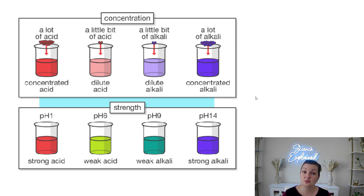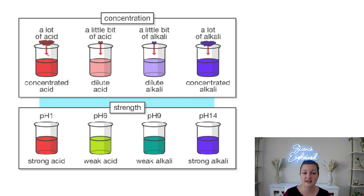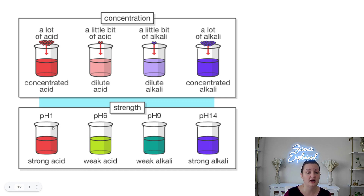Here's a visual to think about concentration, molarity, and pH strength. If we put a whole lot of acid in our solution, we can consider that a very concentrated or high molarity acid. This would be an example of like a pH of one — a low number — and that's going to be a strong acid.